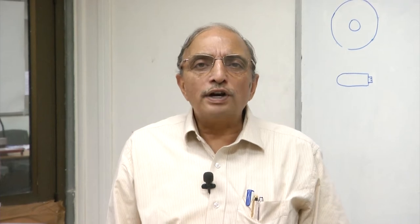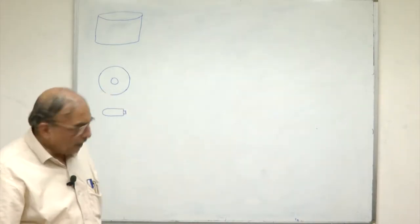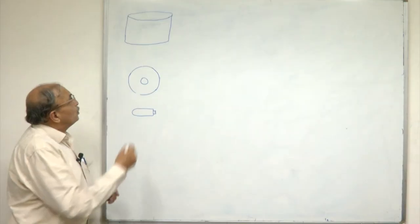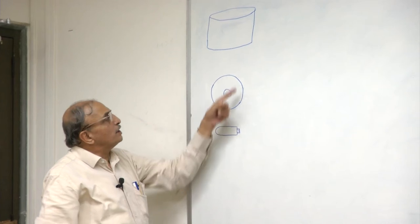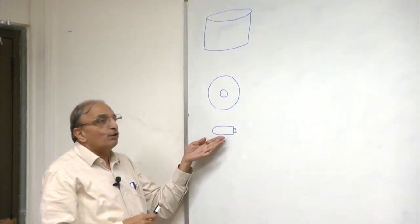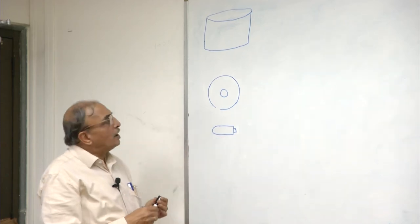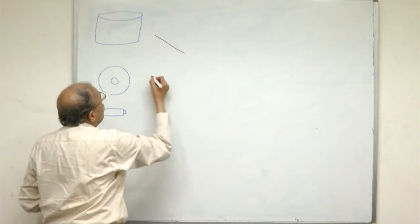We saw very briefly three different types of technologies that are used to store data externally. Symbolically, these are shown here on the board. This is a typical symbol of an external hard disk, this is a symbol used to represent a CD, and this obviously looks like a pen drive. All of these contain data in the form of files.